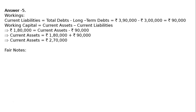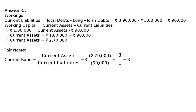Now we find the current ratio: current assets upon current liabilities, that is Rs. 2 lakh 70,000 upon Rs. 90,000, which equals 3 by 1, that is 3:1. And this is the final answer.